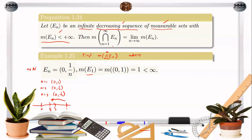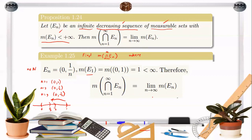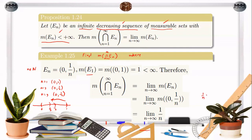Hence, we can apply the proposition. The limit of the Lebesgue measure of the open interval from 0 to 1 over n, as n approaches infinity, equals the limit of the length of this open interval, which is 1 over n minus 0, equal to 1 over n. Therefore, the limit of 1 over n as n approaches infinity is 0.